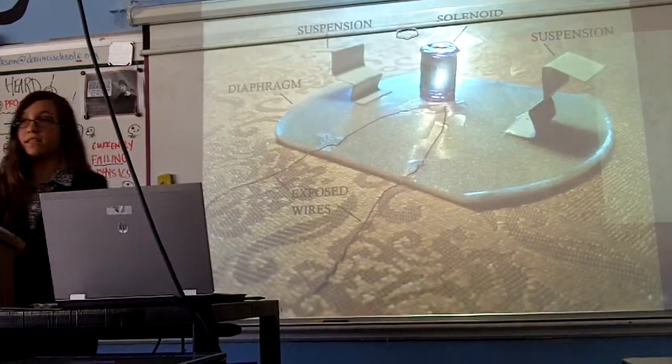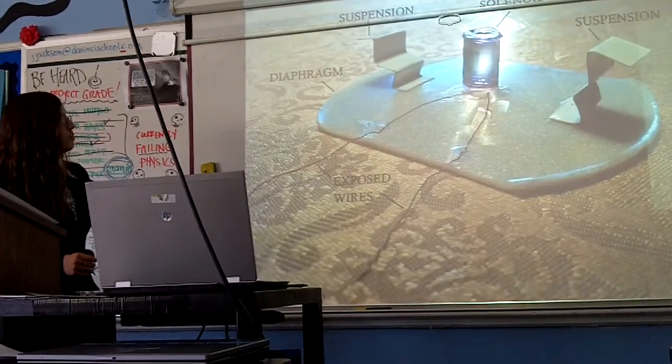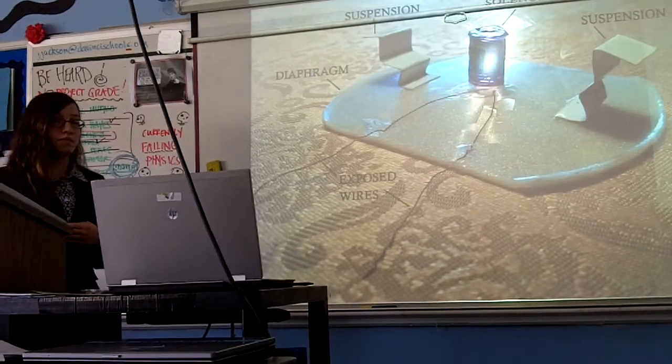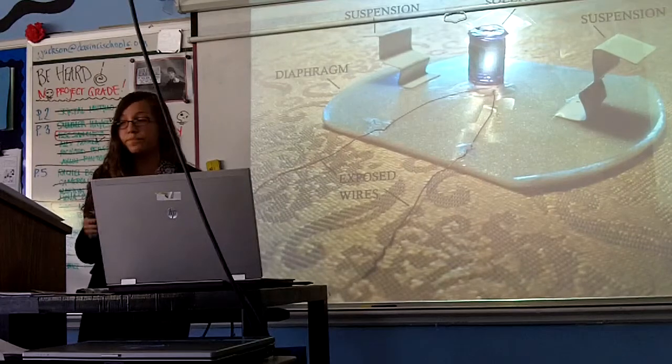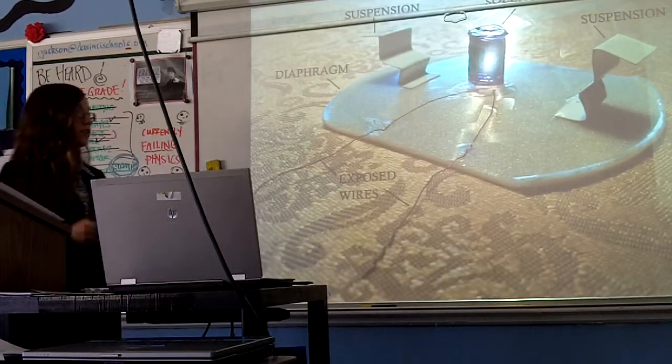Also glued to the diaphragm are two folded pieces of paper that act as suspension. They connect the diaphragm to the base of the speaker and keep the speaker from falling apart. In addition, the two exposed wires of the solenoid are extended and sit outside of the speaker so that we can actually use it. Now that we know how it's put together, we can begin to understand how it functions.